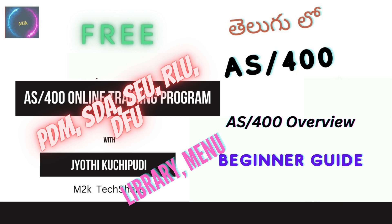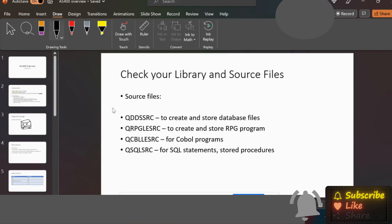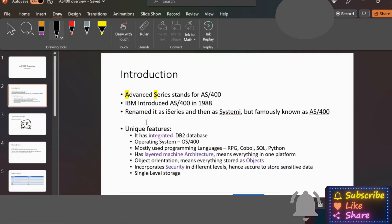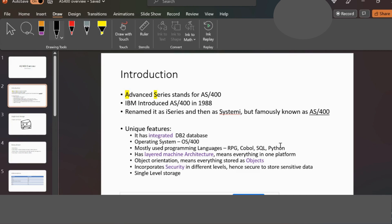Welcome to the AS400 overview of the main features of the AS400. AS stands for Advanced Series or Advanced System. IBM introduced the AS400 in 1988. After that, it was renamed several times — like iSeries or System i — but it is most famously known as AS400.